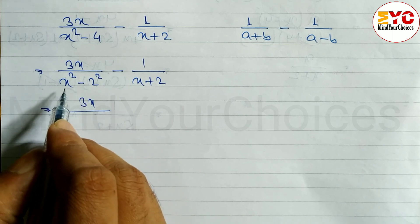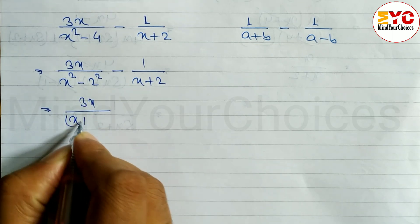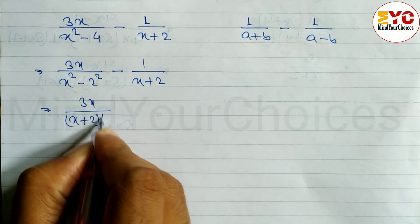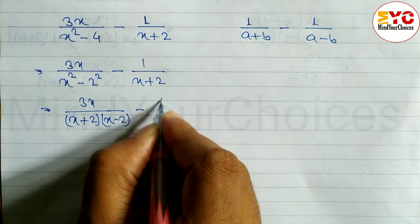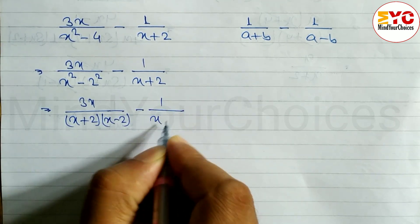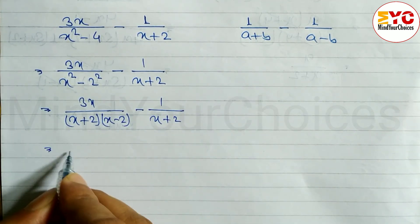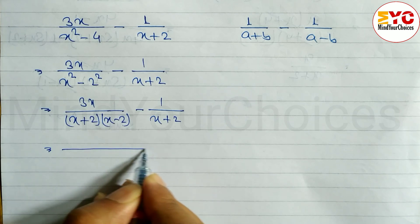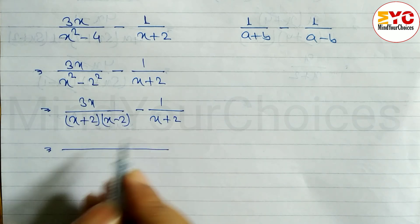After that, 3x divided by — we can convert using the formula: a squared minus b squared equals (a plus b)(a minus b), so x squared minus 4 becomes (x plus 2)(x minus 2). Then minus 1 divided by (x plus 2). Now we have to take the LCM. The LCM here is (x plus 2)(x minus 2).